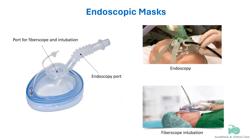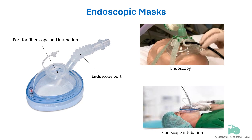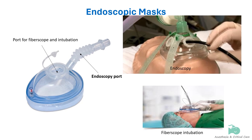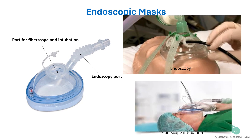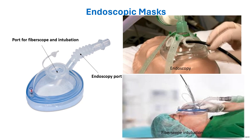An endoscopic mask is designed to allow mask ventilation while an endoscope is being used. The port in the mask body allows a fibroscope to be inserted into the nose or mouth. The fibroscope can be used to railroad an endotracheal tube into the trachea.